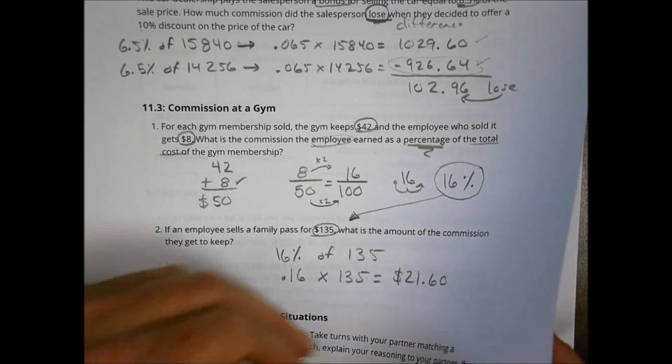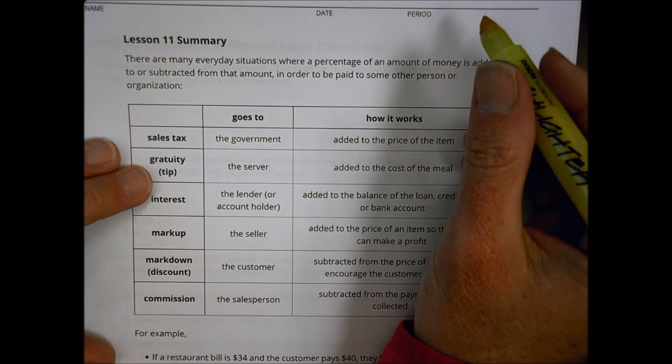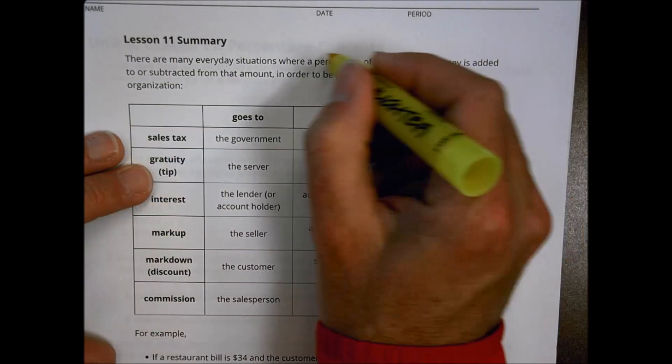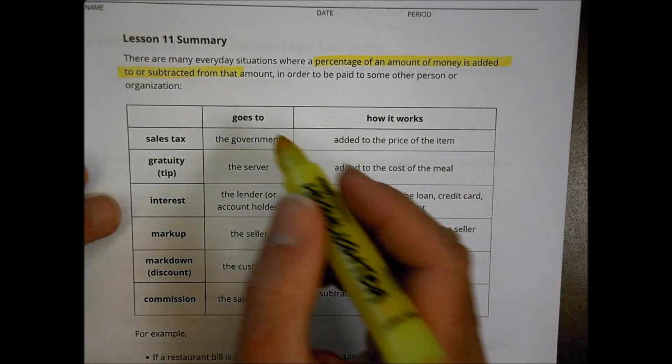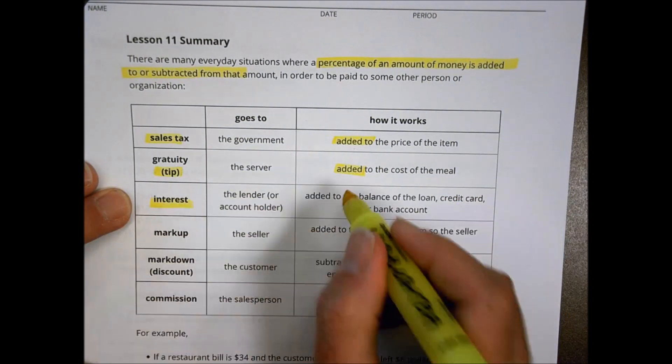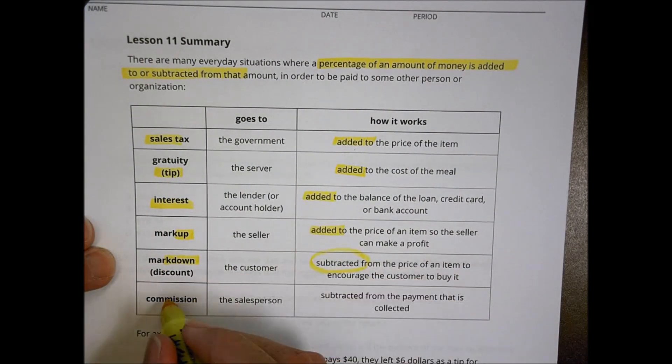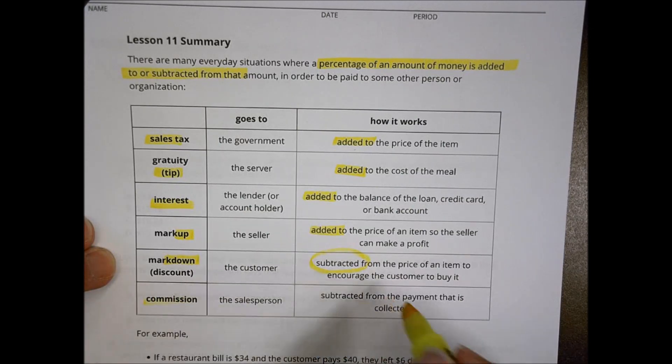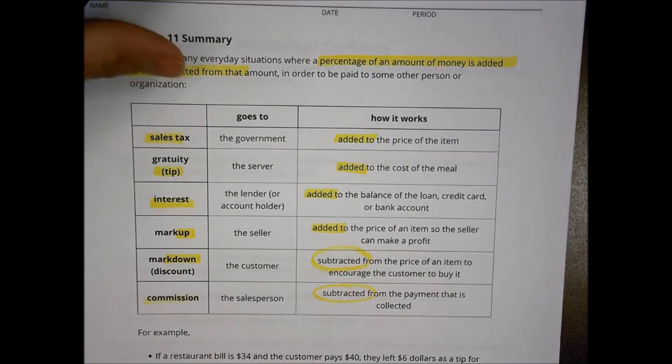So that was a bit of the lesson today. And so again, looking at your summary, just keep in mind that there are many everyday situations where a percentage of an amount of money is added to or subtracted from that amount in order to be paid to somebody. So we look at things like sales tax is added, tip is added, interest is added, a markup is added, but a markdown is subtracted, and a commission is also going to be subtracted from the payment that is collected. So there's some things to keep in mind as you move forward in today's homework. So take a moment to do your homework, press pause, and then come back and check it out.